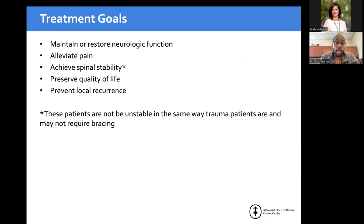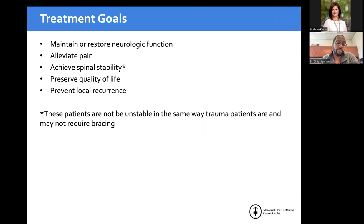Treatment goals are restoring or maintaining neurologic function, managing pain syndromes, and alleviating spinal instability. Cancer patients aren't unstable the same way trauma patients are — they don't need bracing to prevent fracture progression, but rather have abnormal degrees of motion creating pain syndromes. These surgeries are palliative in nature. When we do separation surgery to get people onto definitive radiation and systemic therapy, it's really about preventing local recurrence.